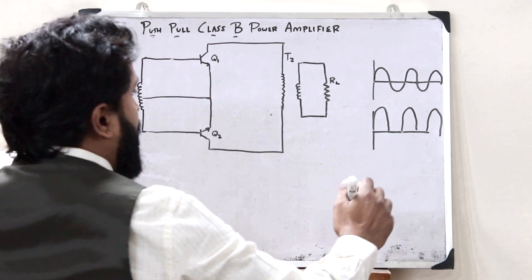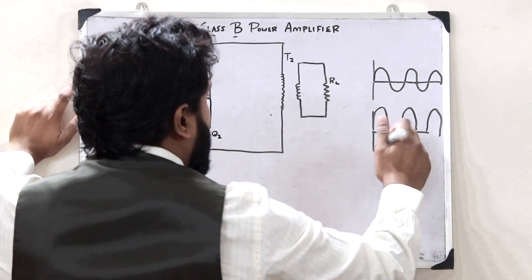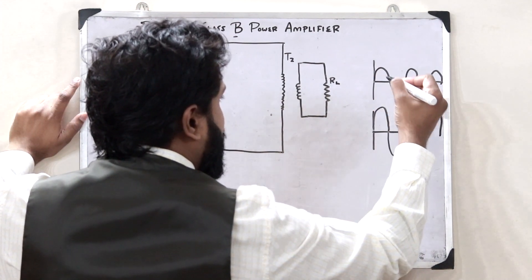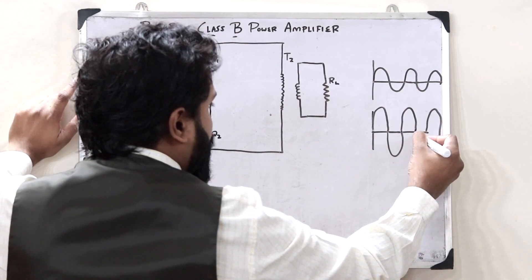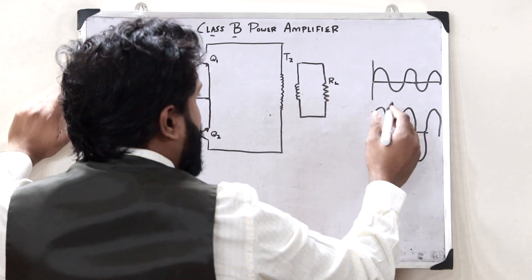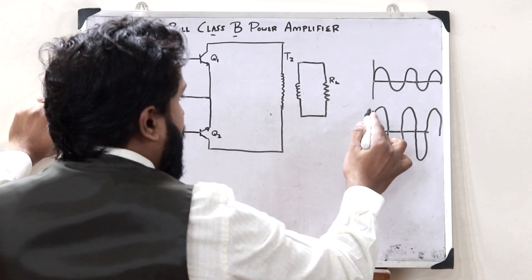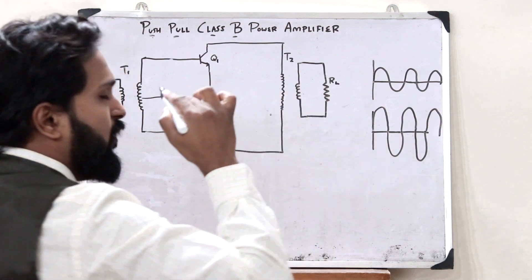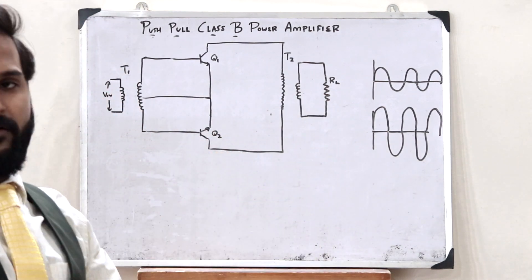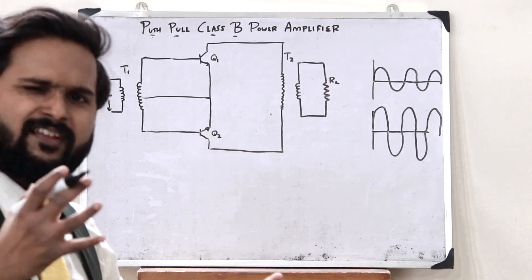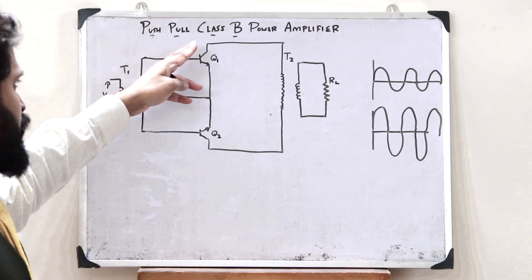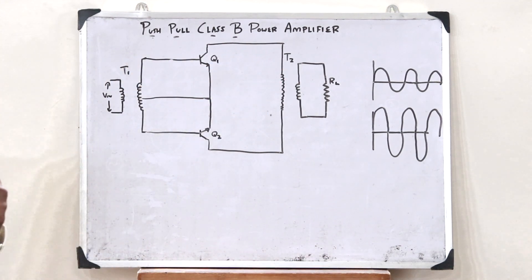In the case of a push-pull class B amplifier, we get an output for this half as well, and also an amplified output for the other half. So for both halves we are getting an amplified output. This is simply what you call a push-pull class B power amplifier.